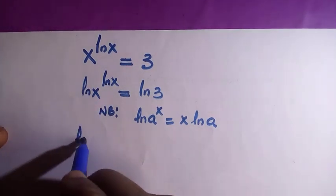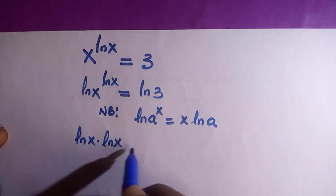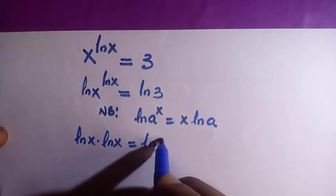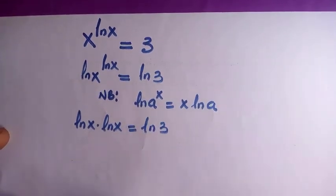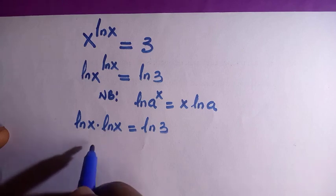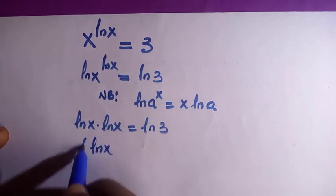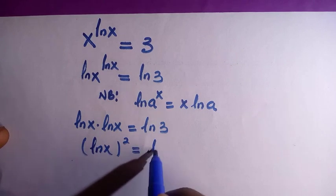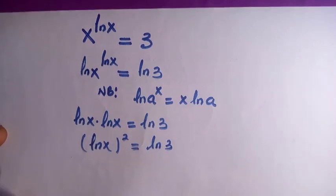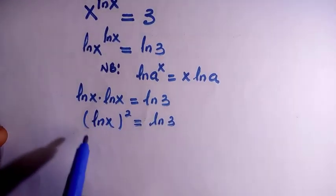We have ln of x dot ln of x equals to ln 3. So if these two multiply each other, we have (ln x)^2 equals to ln 3. We're going to find x.